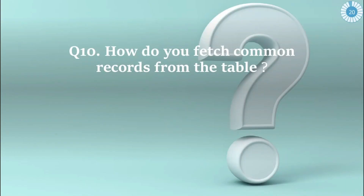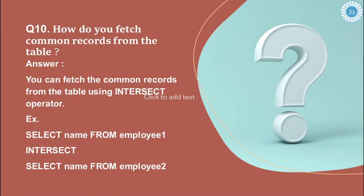The tenth and last question is: how do you fetch common records from two tables? In my previous videos I told you about set operators — the set operator that gives you common values between two tables is the INTERSECT operator. INTERSECT returns the common values between two tables.